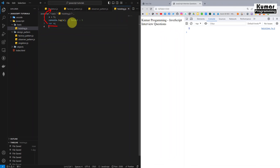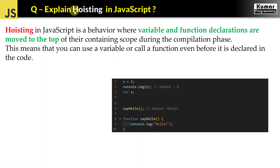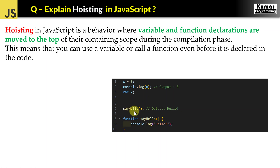Now we will see function hoisting. Here we are using variable hoisting; now we are going to use function hoisting. Hoisting is mainly useful in the case of functions — we can write our function anywhere and utilize it anywhere in our code, within the scope. In this example, we are calling our function first, and then after that we are declaring our function.